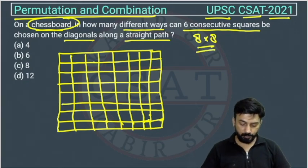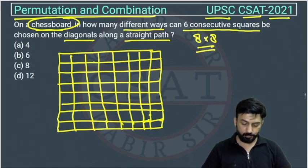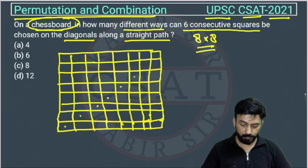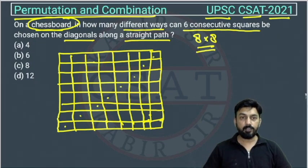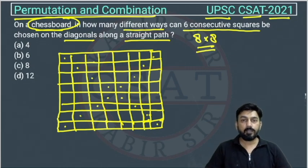Another thing, we have to select 6 consecutive squares on the diagonals. On the diagonals, if you will see, take 1, 2, 3, 4, 5, 6, 7, 8. Right? So on the diagonals, how many squares are there? 8. And this side also: 1, 2, 3, 4, 5, 6, 7, 8.